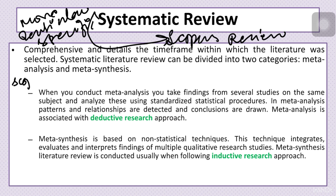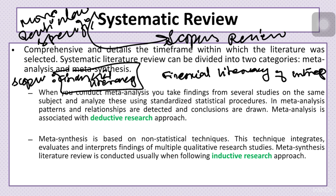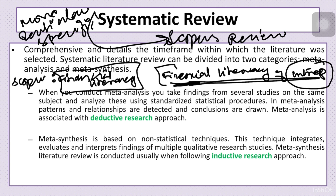In a scoping review, we study a broad variable like financial literacy. But in a systematic review, I become more specific — for example, studying the financial literacy of a particular group such as entrepreneurs. I can then explore how much financial literacy entrepreneurs have and in which areas they are lagging. I've made a separate video on how to write a systematic review step by step — the link will be in the description box.